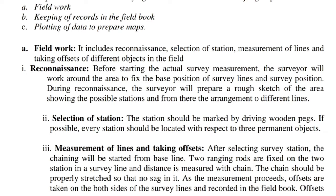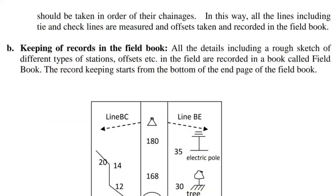Measurement of lines and taking offsets: After selecting survey stations, chaining will be started from the baseline. Two ranging rods are fixed on two stations in a survey line and distance is measured with the chain. The chain should be properly stretched so that there is no sag. As measurement proceeds, offsets are taken on both sides of the survey lines and recorded in the field book. All lines including tie and check lines are measured, offsets taken, and recorded in the field book.